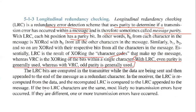The LRC bits are computed in the transmitter while the data are being sent, and then appended to the end of the message as a determinant character. In the receiver, the LRC is recomputed from the data and compared with the appended LRC. If the two LRC checksum characters are the same, most likely no transmission errors occurred; if they are different, one or more transmission errors occurred — similar to checksum.